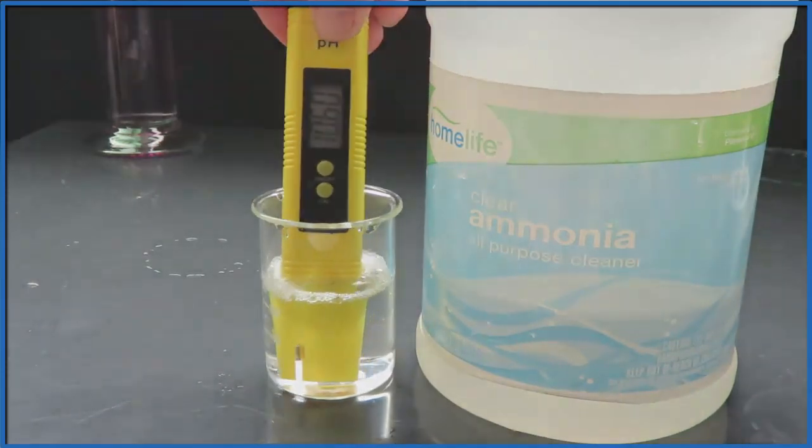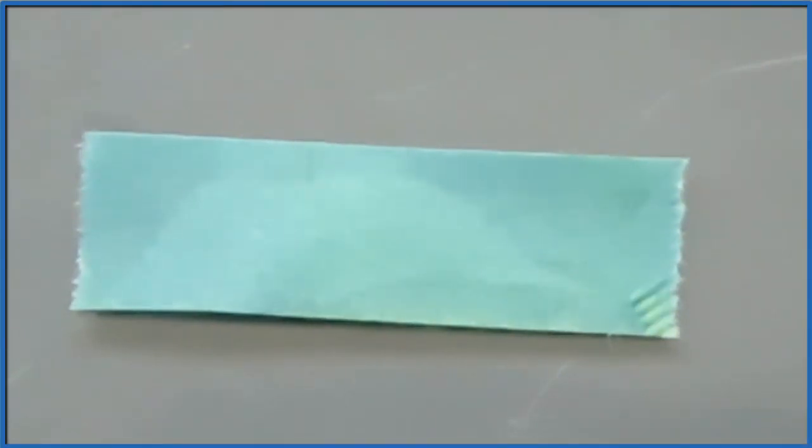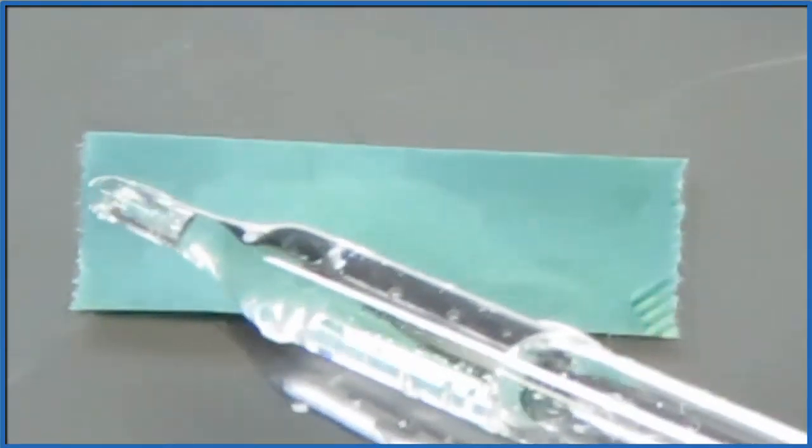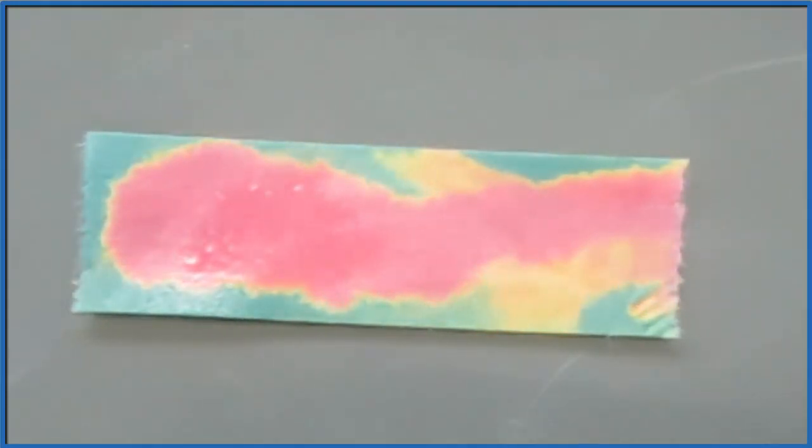If we take that piece of pH paper and put hydrochloric acid on it, it turns red. So the red is where it's an acid and then the green, the bluish, that's the base, that's where the ammonia was.